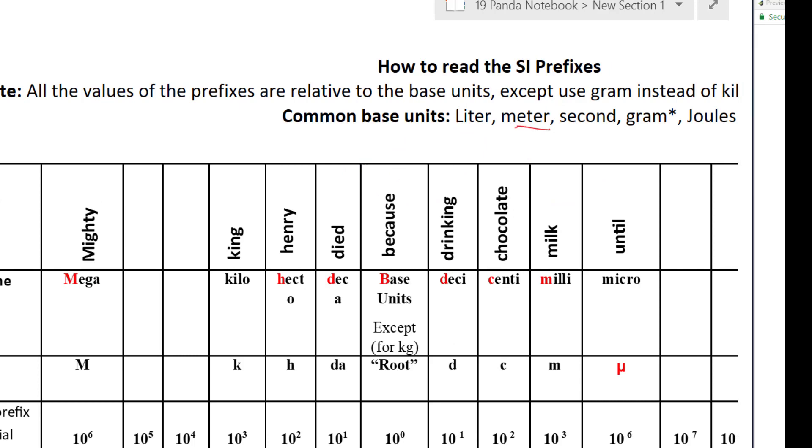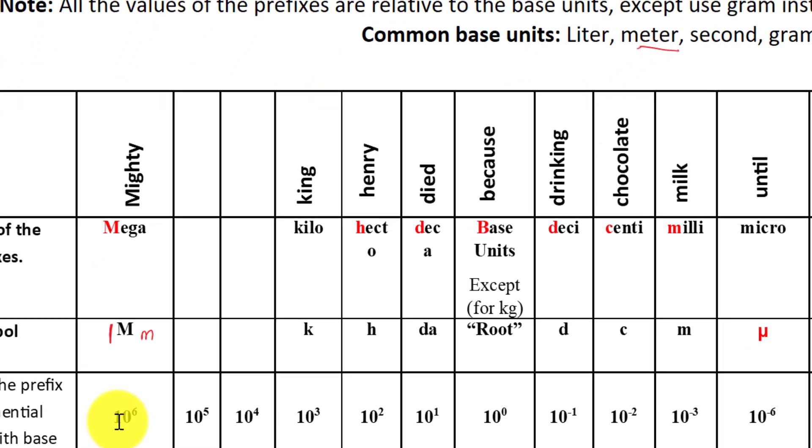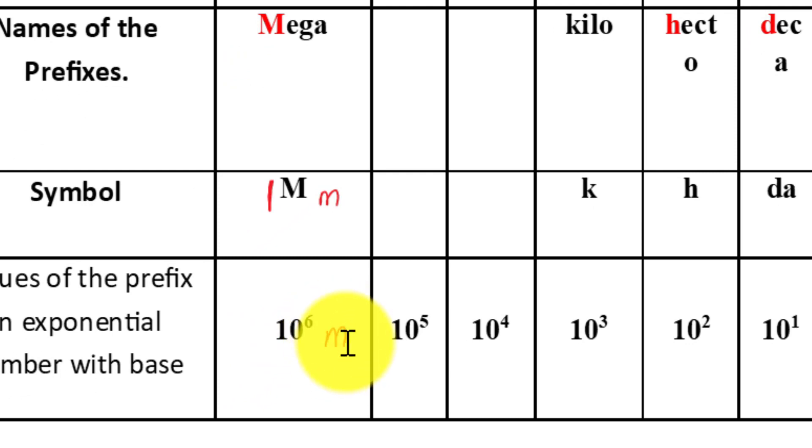The trick is the number in front of the units with a prefix is always one. So one megameter equals ten to the sixth meter.